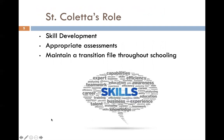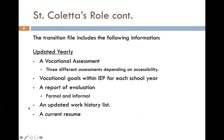Our role specifically falls into three separate categories: maintaining skill development, appropriate assessments for the students throughout their lifespan at St. Coletta, and maintaining a transition file throughout their schooling. The transition file, which is updated yearly, includes a vocational assessment — we have three separate assessments depending on accessibility and their goals for that school year — a report of that evaluation whether formal or informal, an updated work history of things they've done at St. Coletta, and a current resume.